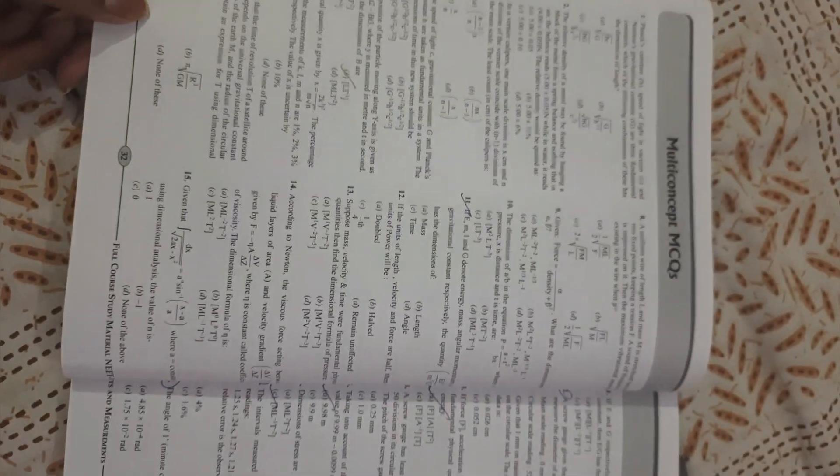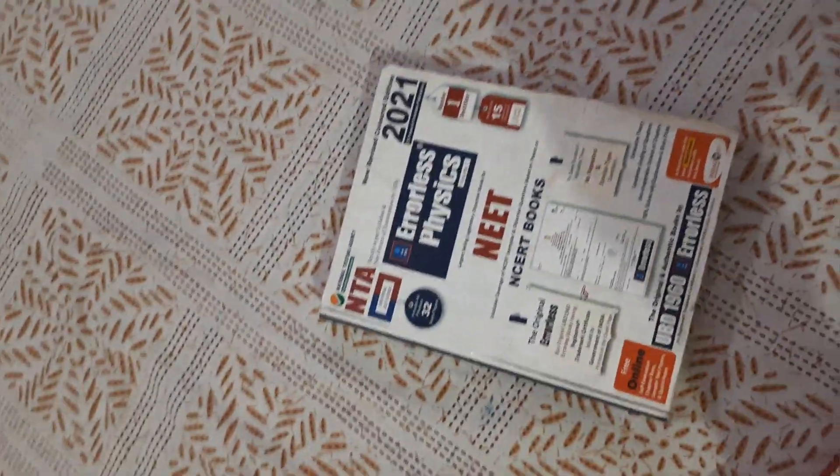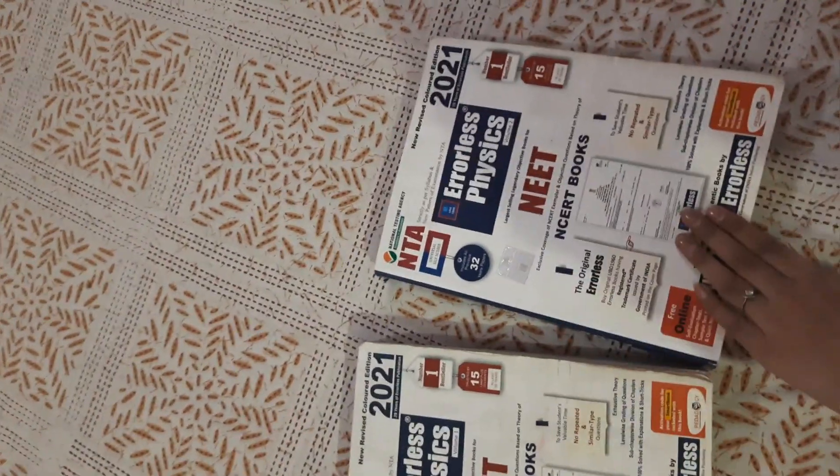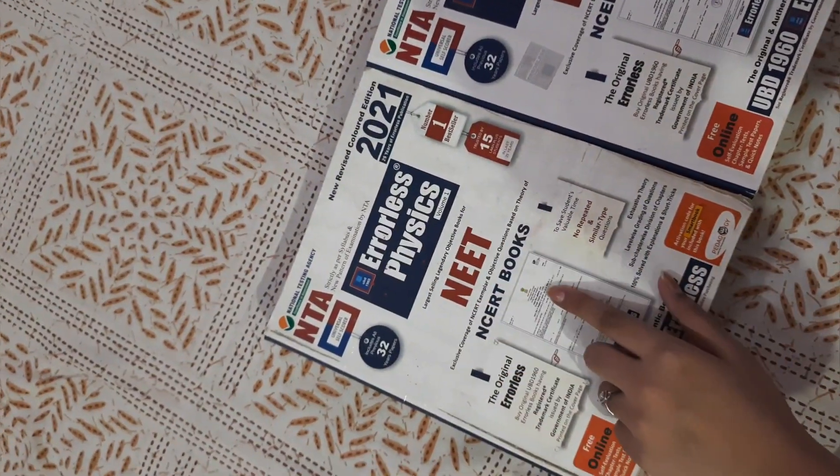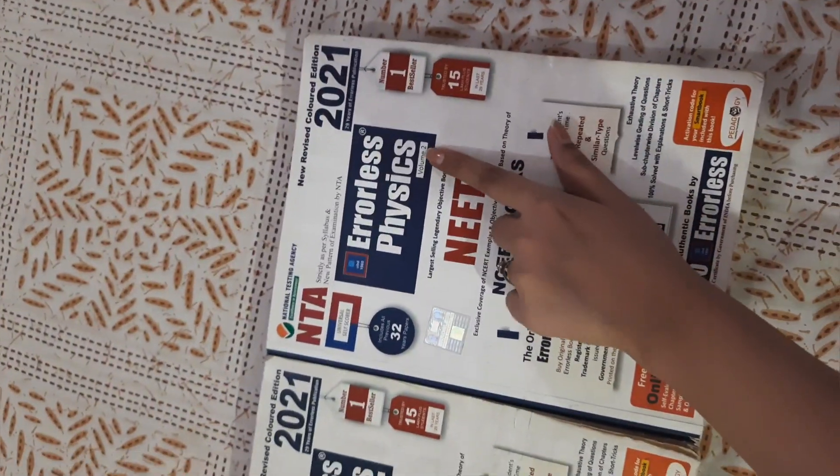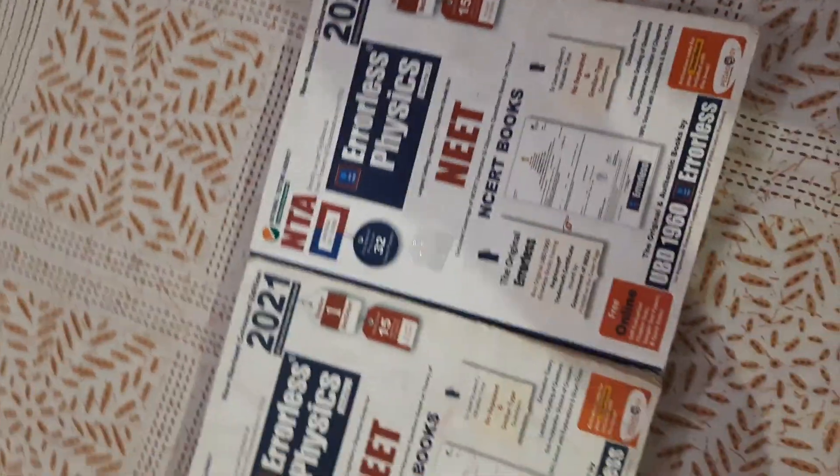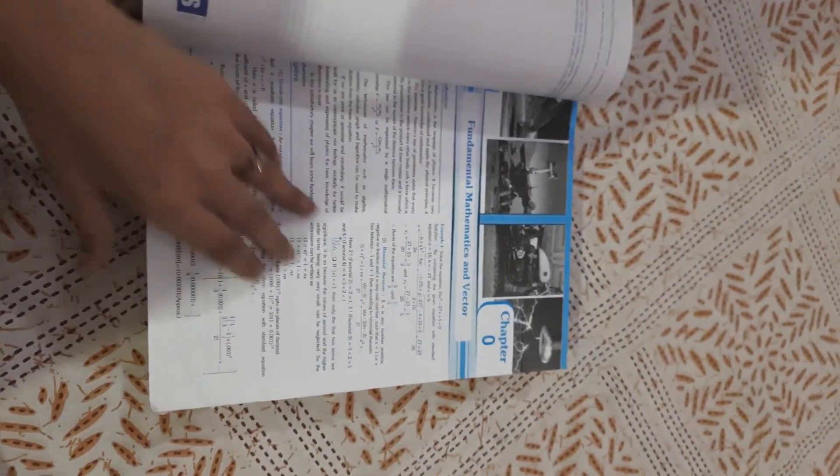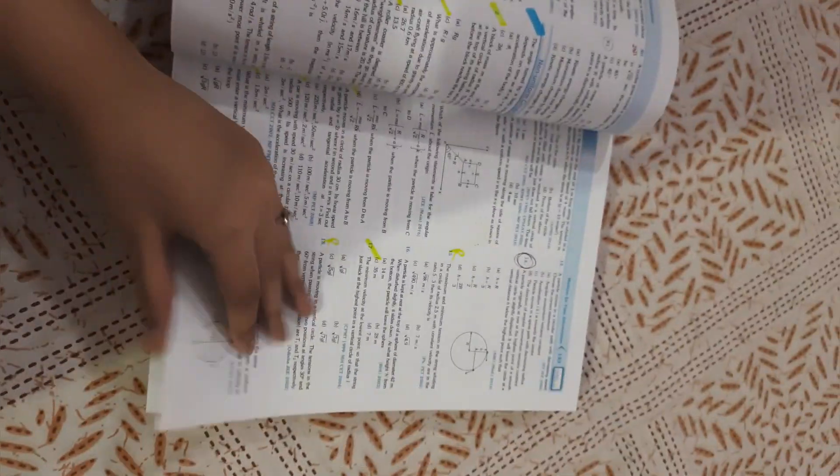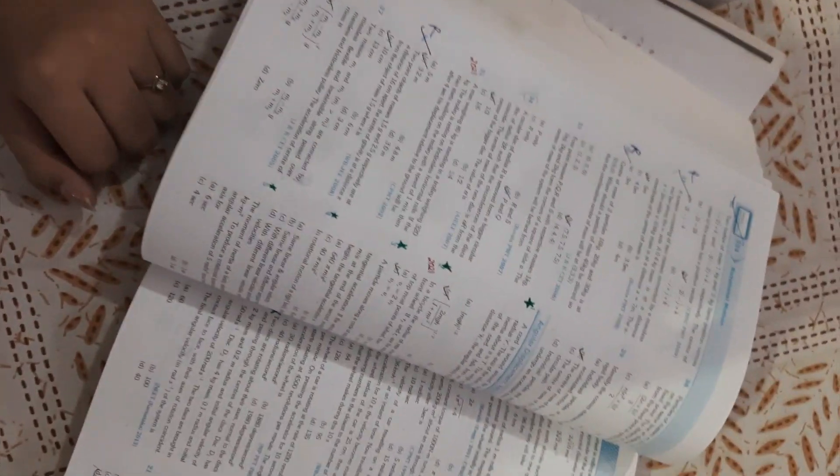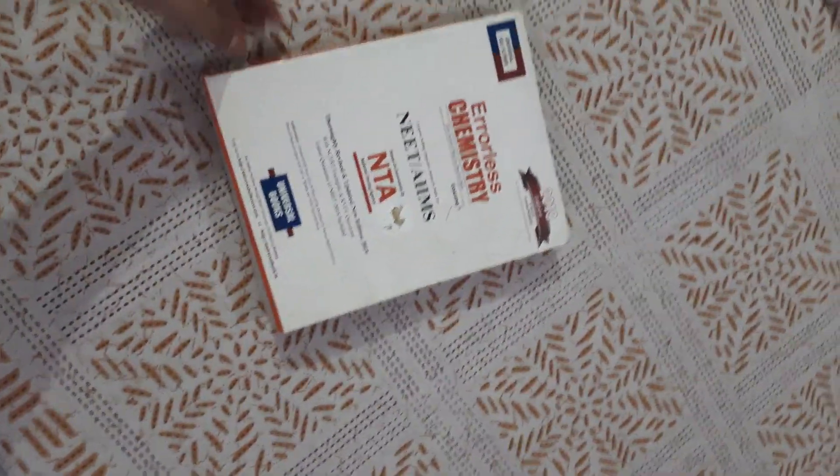So as I mentioned, in 11th I did PW ki modules and one more book, which was Errorless. So I did PW ki modules, DPPs, and Errorless in 11th. Towards the end of 11th, I was only doing Errorless because it had so many questions that I didn't have time to do PW modules. Errorless has every type of question you'll get, but I became very stressed because there were so many questions and it took so much time to complete. This was for chemistry as well, I did the same for chemistry.